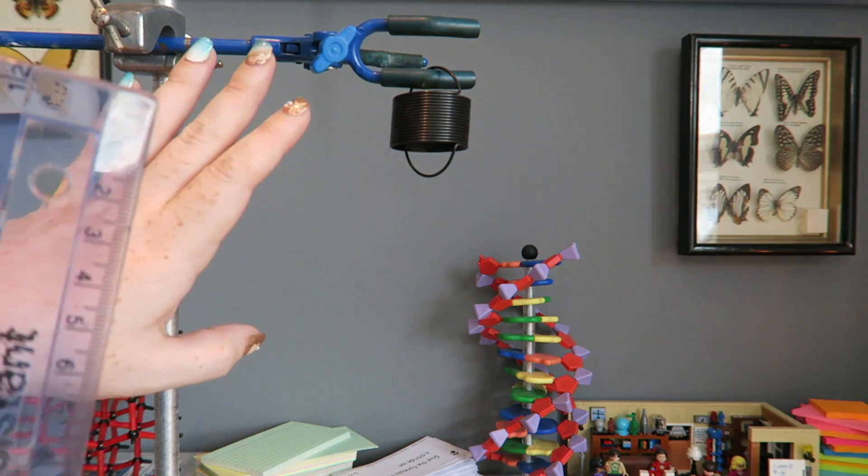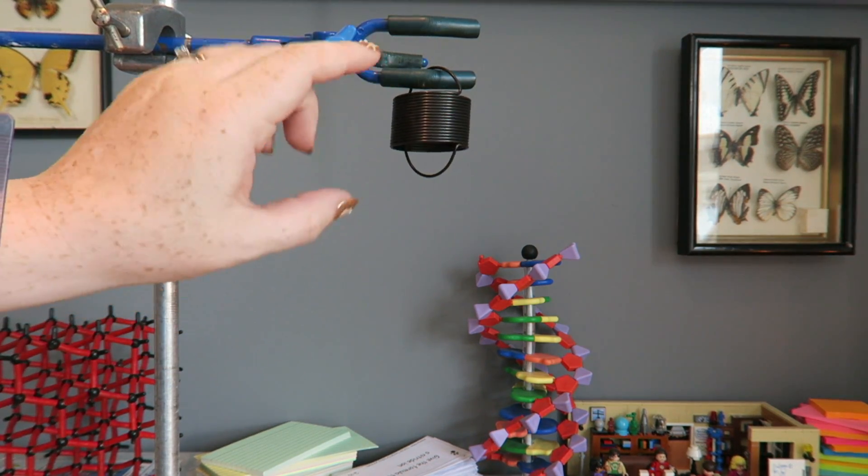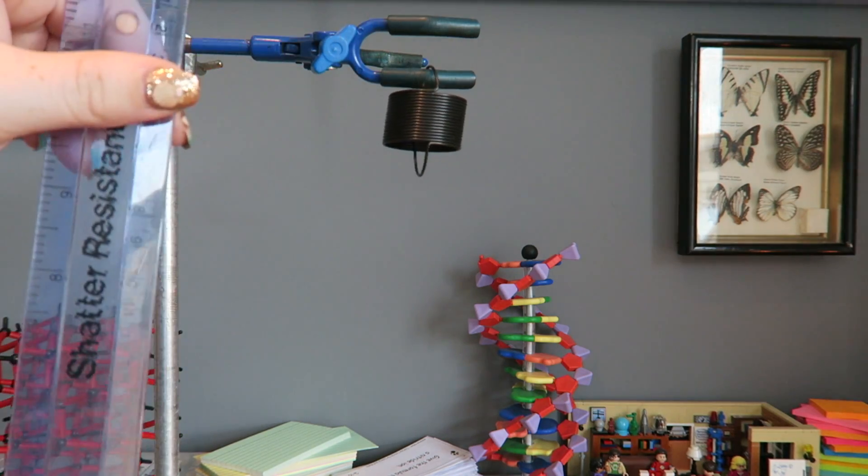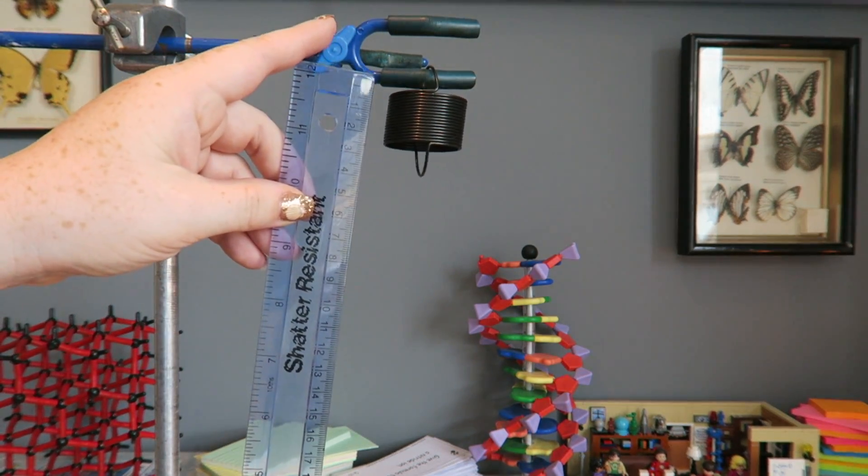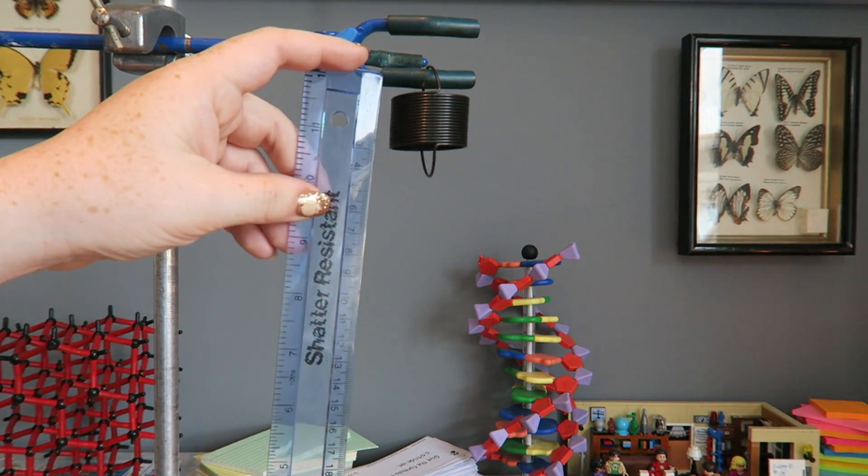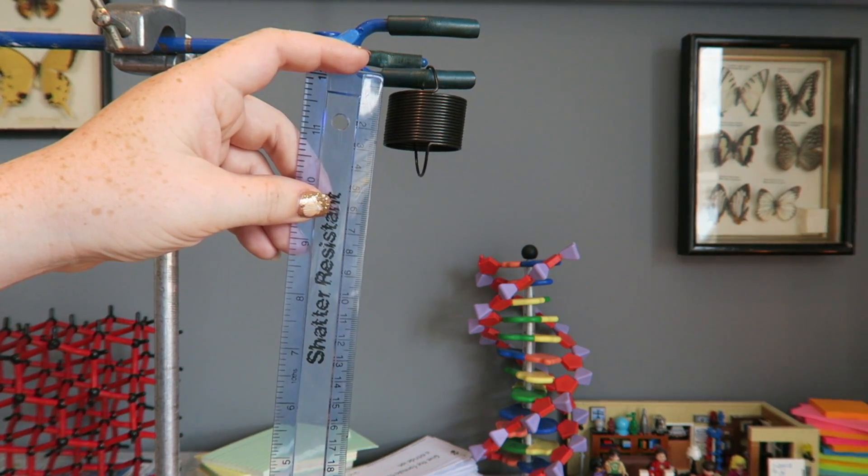For this experiment you're going to need a clamp stand set up with your spring attached on the end and you're going to need a ruler so we can measure the length of the spring. If you have a second clamp you can clamp the ruler on there or you can just hold it.